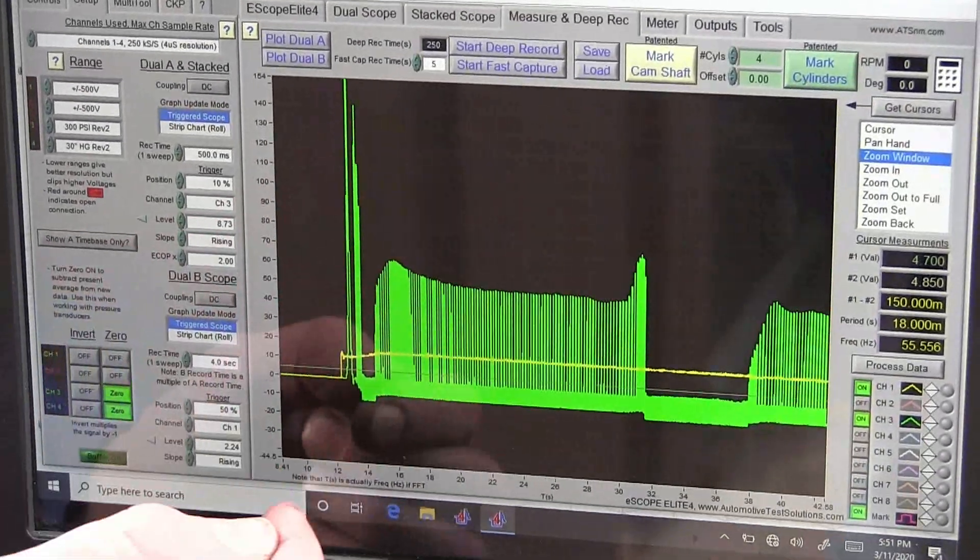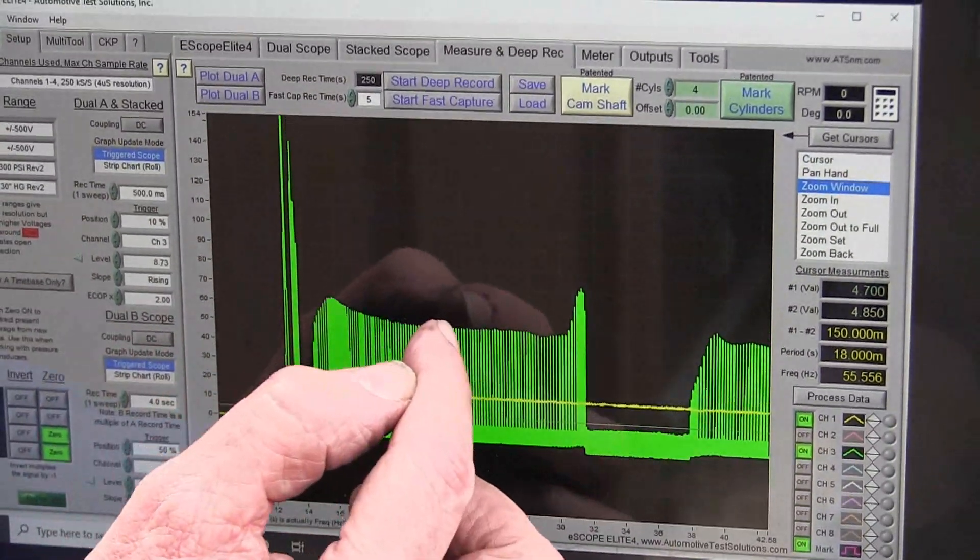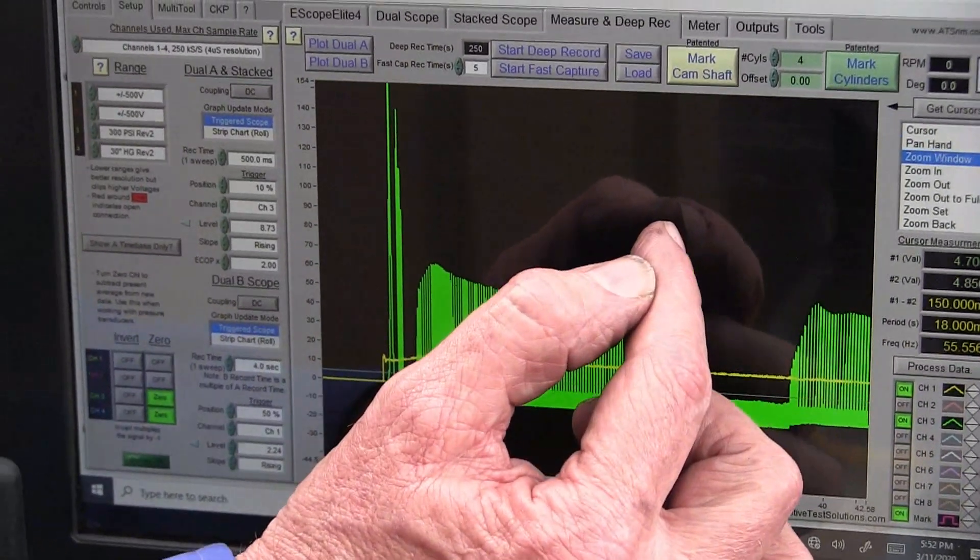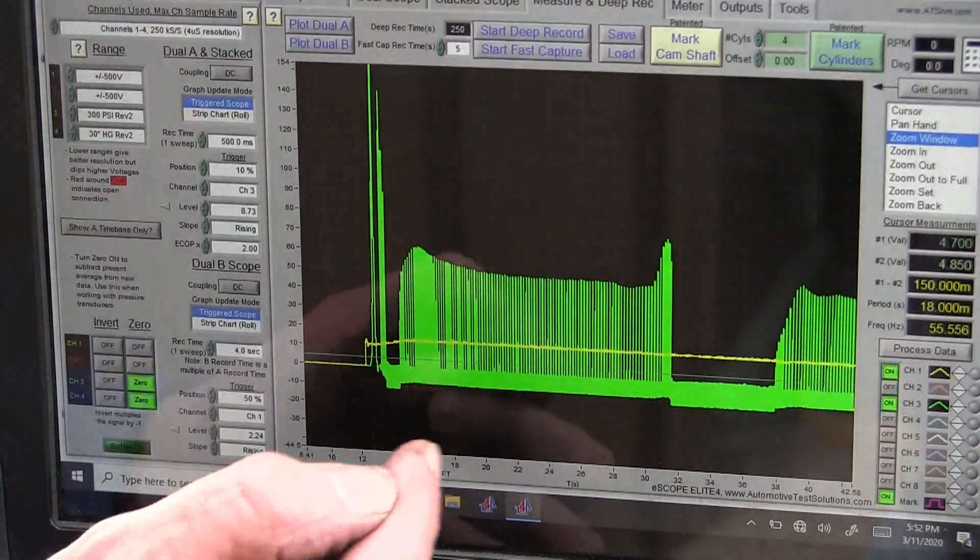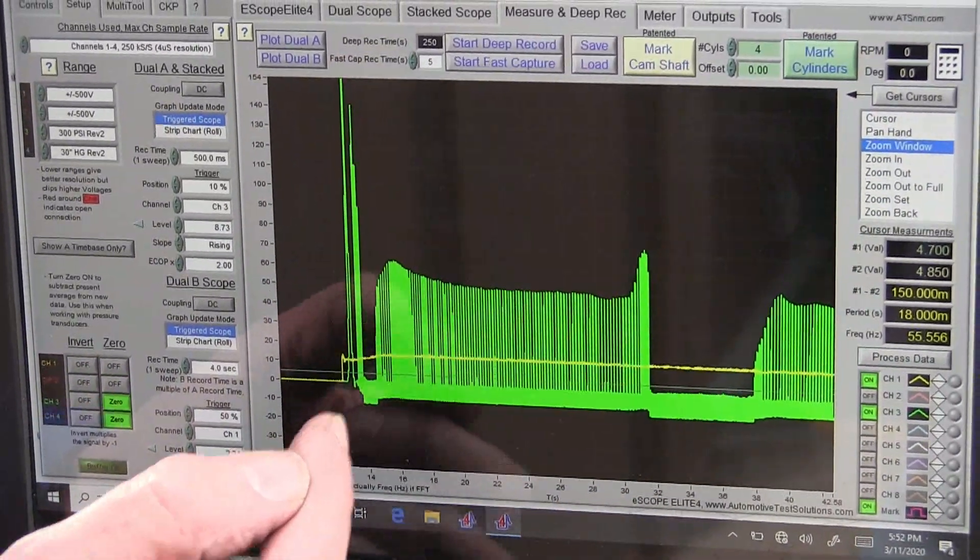This is the trace from this 5.3 Chevy. You can see where we started it, and we start to run across in an idle position. We come up, as we open the throttle up, we increase the air into the cylinder, and the engine starts to spin faster. More energy is being put into it.